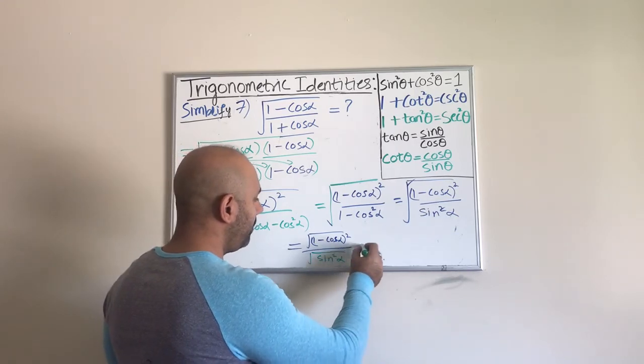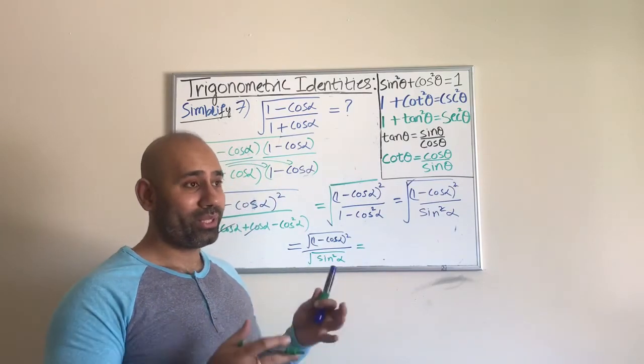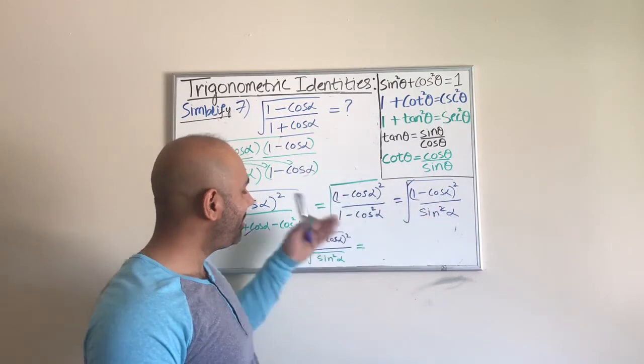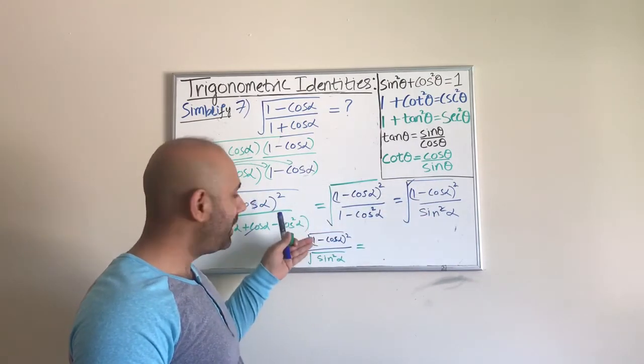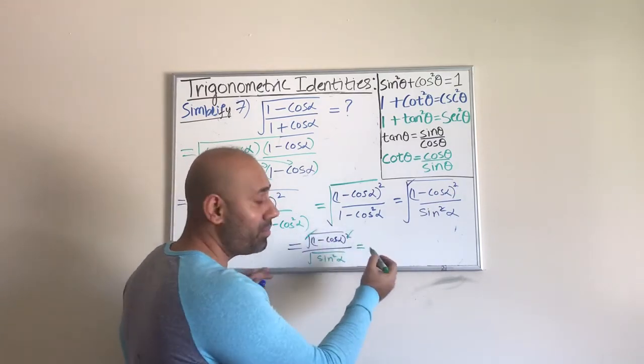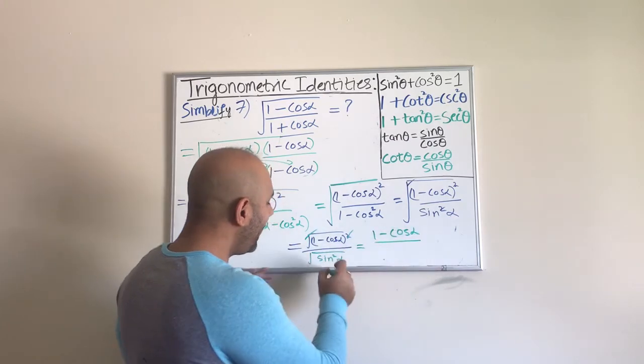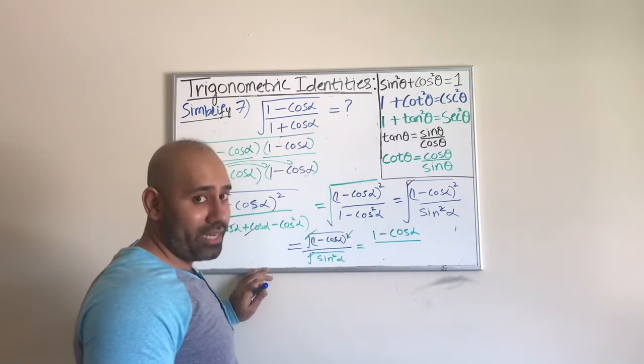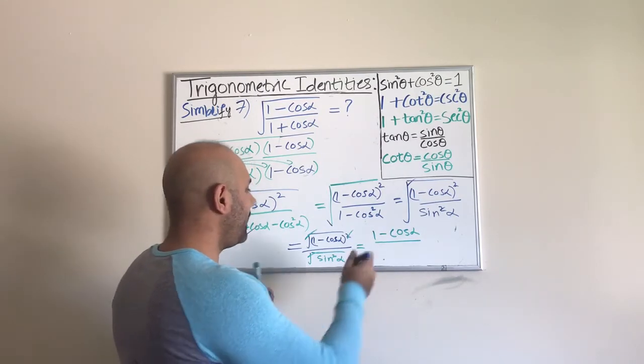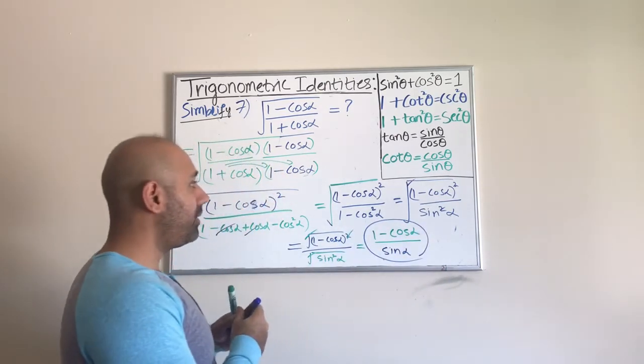Because I don't want any of you to get confused how I'm able to get rid of both the squares and the square root. There was a square root with both the numerator and the denominator, so you can put the square root separately with the numerator as well as the denominator. Now I can cross out square and square root from the numerator and I'll be left with just 1 minus cosine alpha, and I can cross out the square and square root from the denominator piece as well and I'll be left with only sine alpha. And that is the best we can do in this case. This is the simplified form.